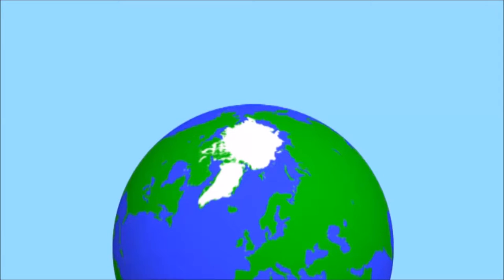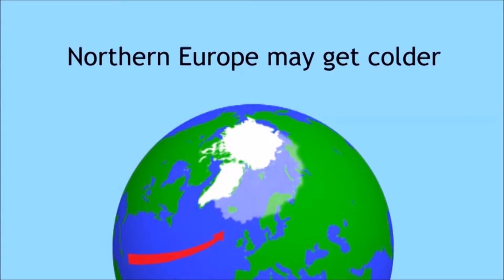Some models suggest for example that the Gulf Stream, which keeps Western Europe relatively warm in winter, may not reach so far north. As a result of this, Northern Europe may actually get cooler as the planet warms.